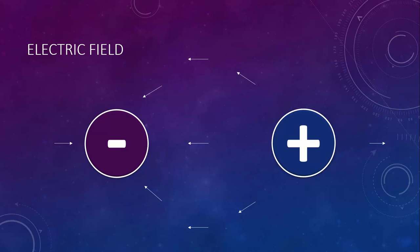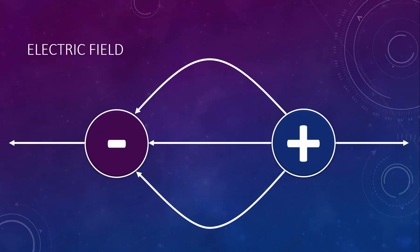That's the basic idea. We could do many more of these, but it's not really worth our time. With these few data points, we can figure out the basic map of this electric field — it looks something like this.